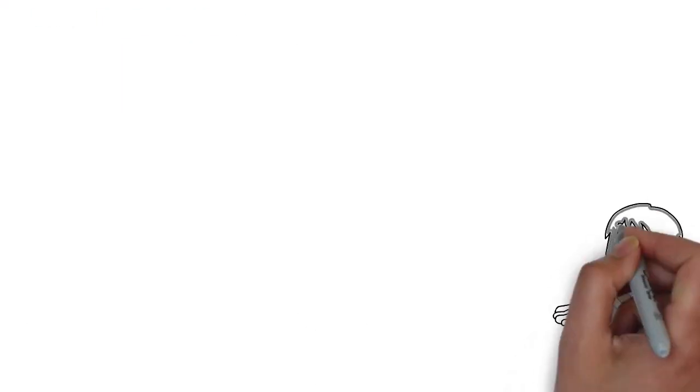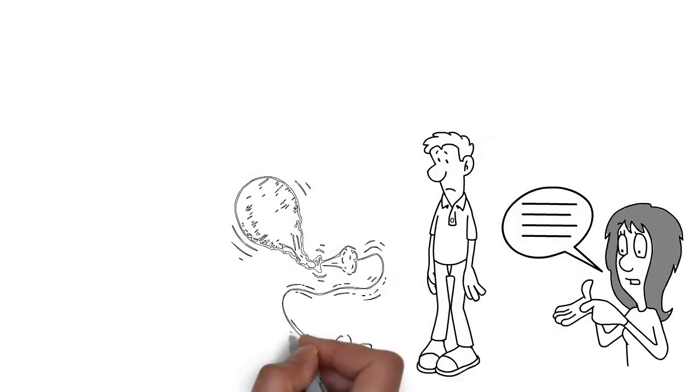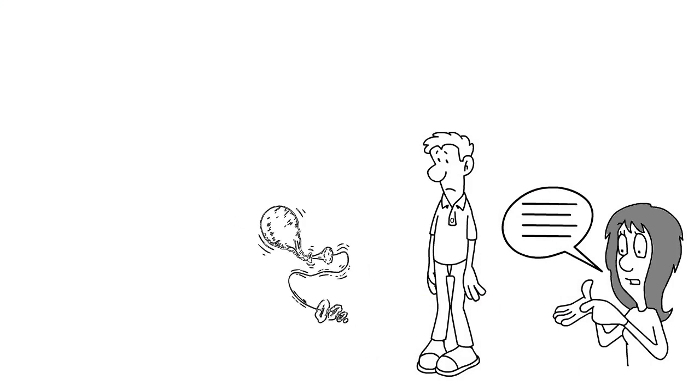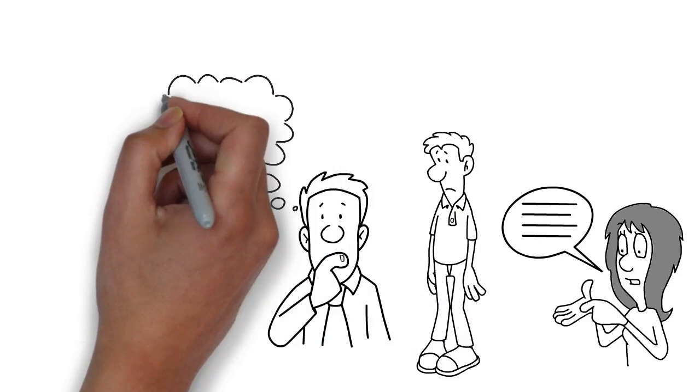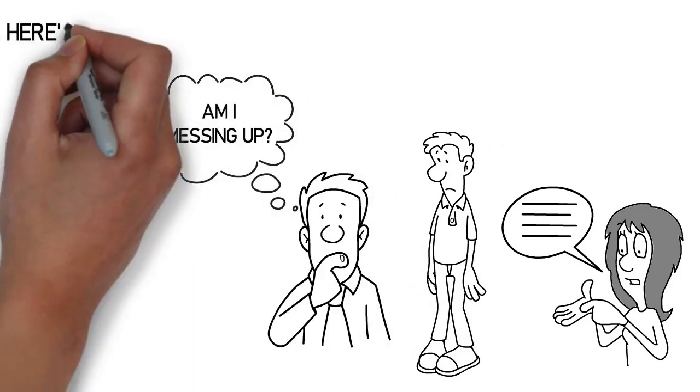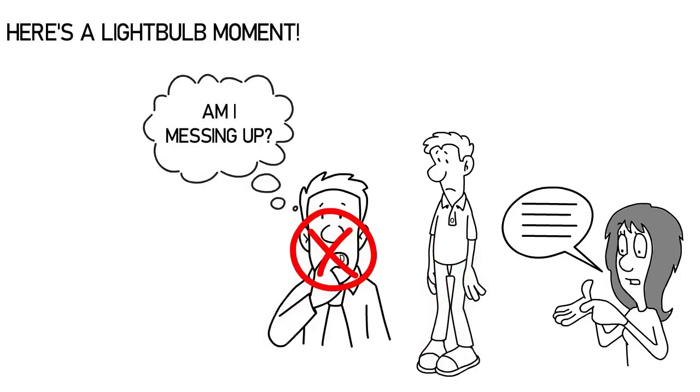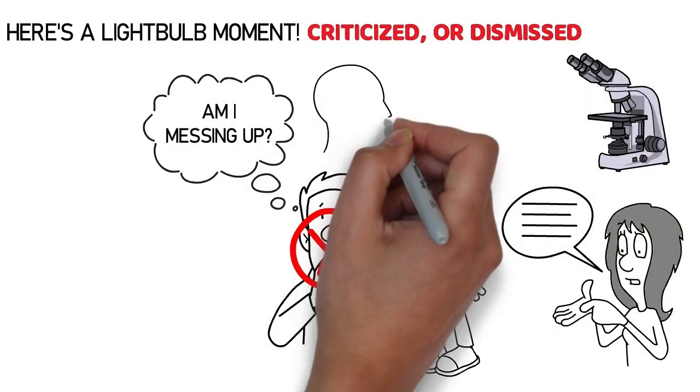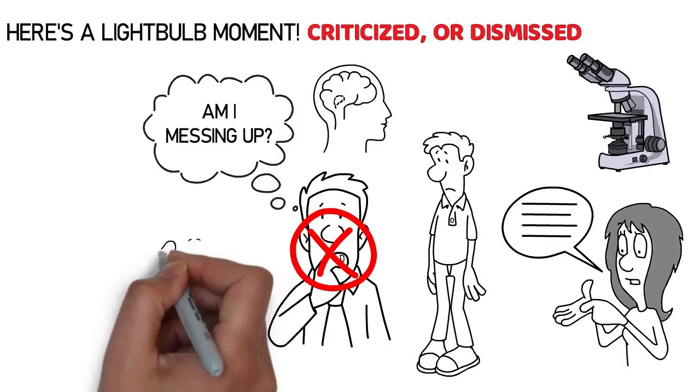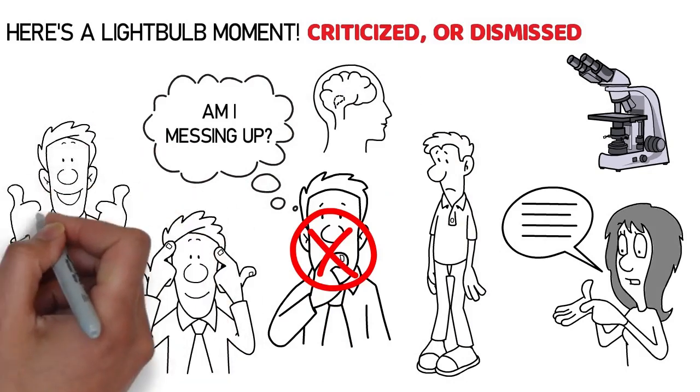It's wild how being undermined or criticized for every little decision chips away at your confidence. It's like slowly deflating a balloon. You don't notice it getting smaller at first, but suddenly, it's just gone. This constant doubting doesn't just put you on edge, it burrows into how you see yourself, and your ability to make even the simplest call without wondering, am I messing up? But here's a lightbulb moment: realize that this isn't about your ability to choose wisely. It's about being in a spot where your choices are always under a microscope, criticized, or dismissed. The real deal is recognizing this pattern and understanding that your decisions aren't the problem. The issue is the environment you're in where making a choice feels like navigating a minefield.